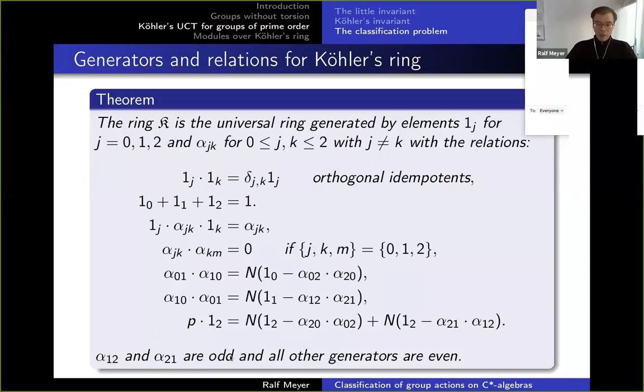There are further products to look at: going back and forth between the same pieces, and taking combinations involving the norm element N(t). You get relations like two norms whose sum is p, and so forth. Except for α_{12} and α_{21} which are odd, all other generators are even elements, reflecting the Z₂-grading.